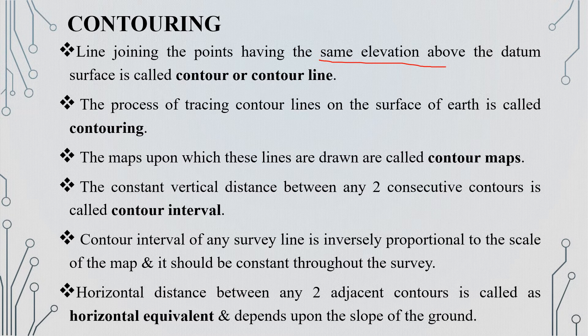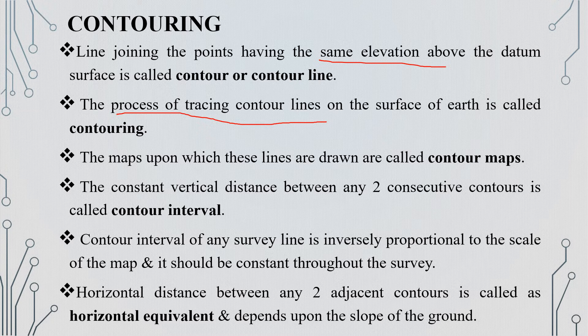At the same elevation on the datum surface, we have points joined together — that is why it is called a contour. The process of tracing and showing contours on a map is called contouring. When we show contours on the map, that is the contour map.